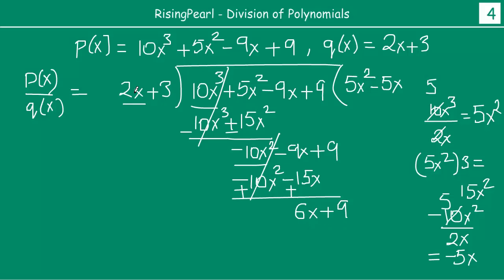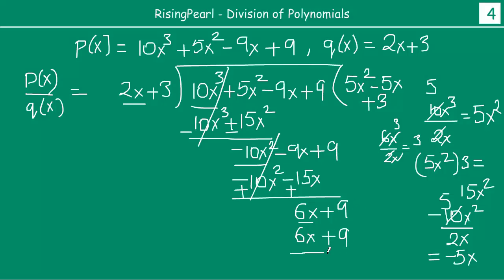So we have 6x divided by 2x — this is the first term. If you divide 6x by 2x, the answer is 3: x will cancel out and 2 threes are 6. So you write plus 3. Now multiply 3 by all the terms of the divisor: 3 times 2x gives 6x, and 3 times 3 is 9. You subtract now — this cancels out, this cancels out — remainder is 0.